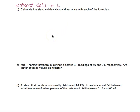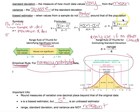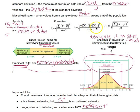Looking at what the formulas require: for the first formula I need the sum of all (x minus x̄) squared; for the second formula I need the sum of all x squareds and the sum of all x's. That means I'm going to need x squared values, so I'll compute L1 squared and store it as list two.